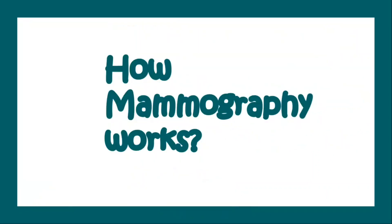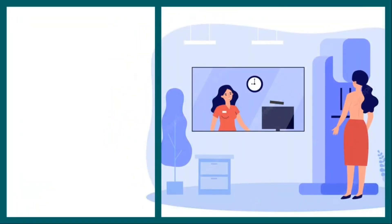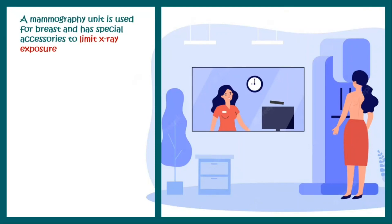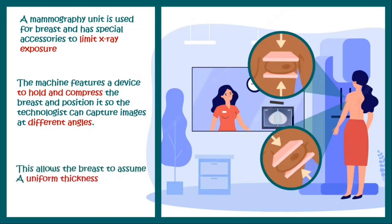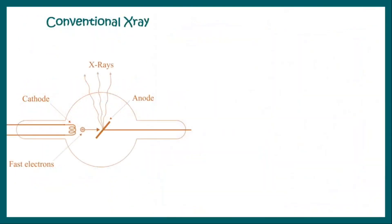When you go to a mammography clinic, a mammography unit is used for the breast and has specialized accessories to limit the x-ray exposure to the breast only. The machine has a feature which holds and compresses the breast into different angles and positions so that the technician can capture images of the breast from different angles. This allows the breast to assume a uniform thickness and gets a clear picture.